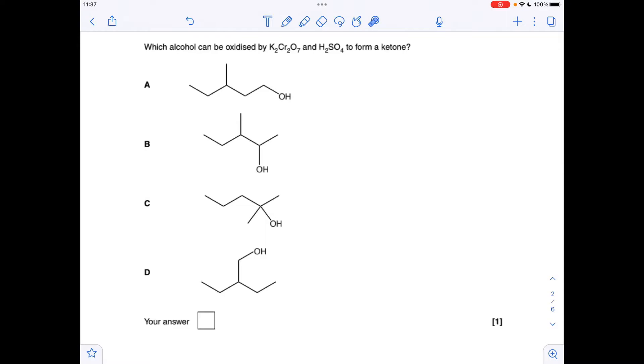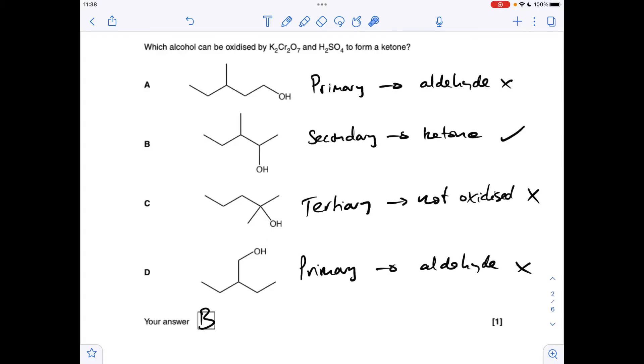Next one, which alcohol can be oxidised by acidified potassium dichromate to form a ketone? Well, it's got to be a secondary alcohol, so we've got to establish what type of alcohols A, B, C and D are. Remember that's all to do with the number of carbons directly bonded to the OH carbon. I won't do them all, but you can see on this first one here, we've only got one carbon directly bonded to that carbon. So that's a primary alcohol, and they are oxidised to aldehydes. You can see that B is the secondary alcohol, that's going to go to a ketone, so B is the answer.